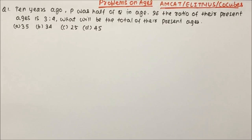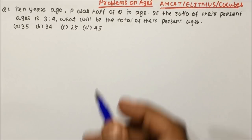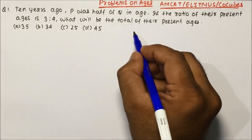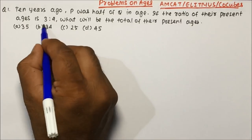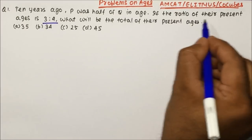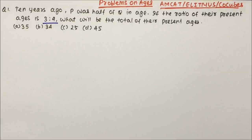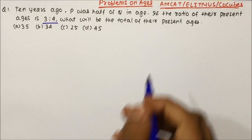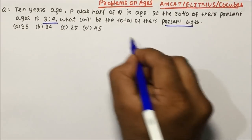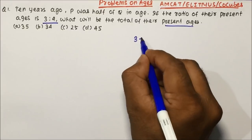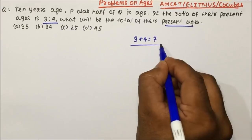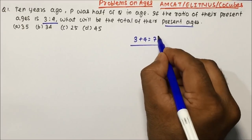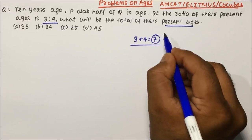Let us start with question number 1. Ten years ago, P was half of Q in age. If the ratio of their present age is 3 is to 4, then what will be the total of their present age? The total of their present age will be 3 plus 4, which is 7. So your answer will be a multiple of 7.